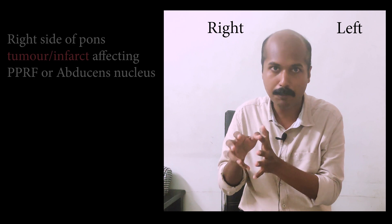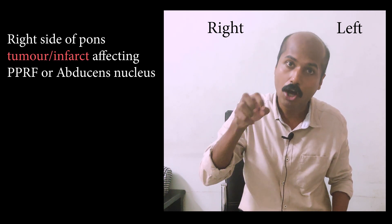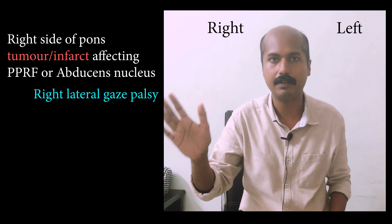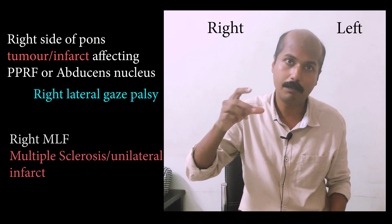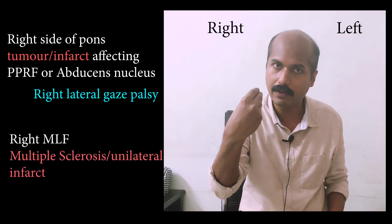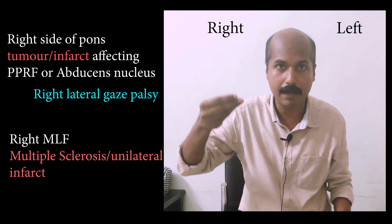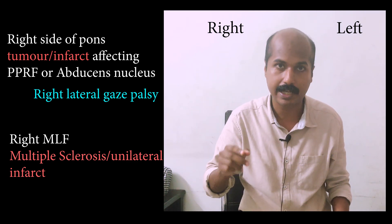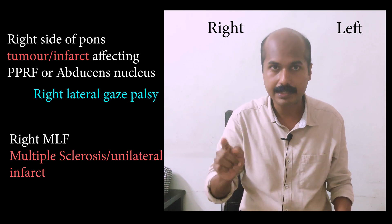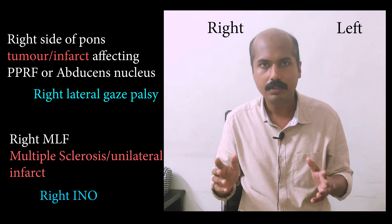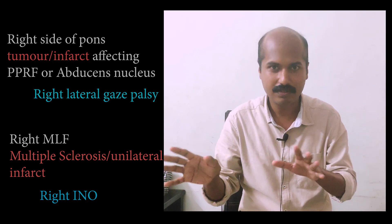A lesion in the right pons affecting the PPRF or abducens nucleus causes a right lateral gaze palsy. Regarding MLF lesions, the most common causes are a localized infarct or a multiple sclerosis plaque, since the MLF is a heavily myelinated tract. A localized MS plaque affecting the right MLF can cause a right INO. These are the common lesions affecting horizontal gaze manifestations in the gaze circuit.